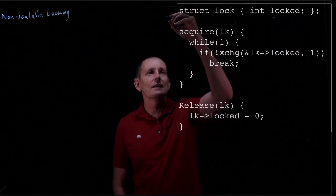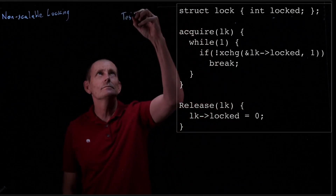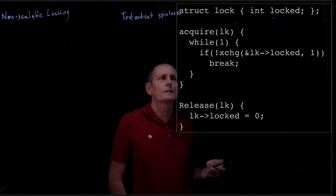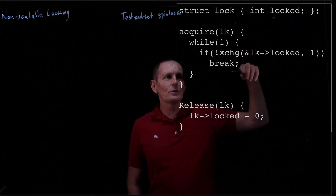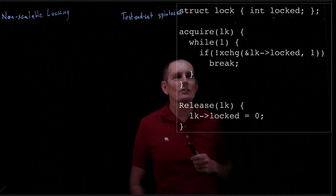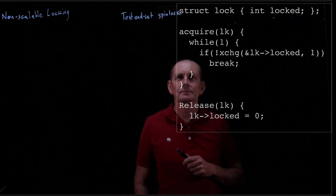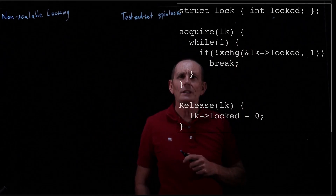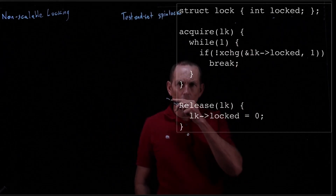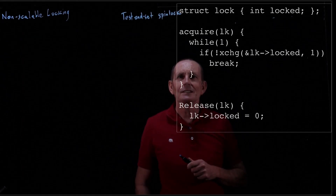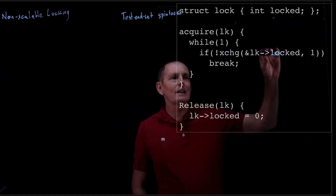This is just our standard test-and-set spin lock. Each core is going through as fast as it can, repeatedly calling exchange. So it's fine in the sense that the cores are wasting only their own time spinning.